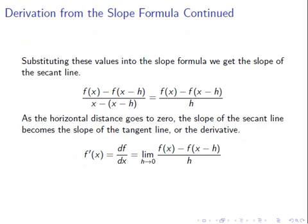We substitute these values into the slope formula to get the slope of the secant line. y2 was f of x, y1 was f of x minus h, x2 was x, and x1 was x minus h. This reduces to f of x minus f of x minus h over h. As the horizontal distance goes to 0, the slope of the secant line becomes the slope of the tangent line, or the derivative. So f prime of x equals df/dx equals the limit as h approaches 0 of f of x minus f of x minus h over h.